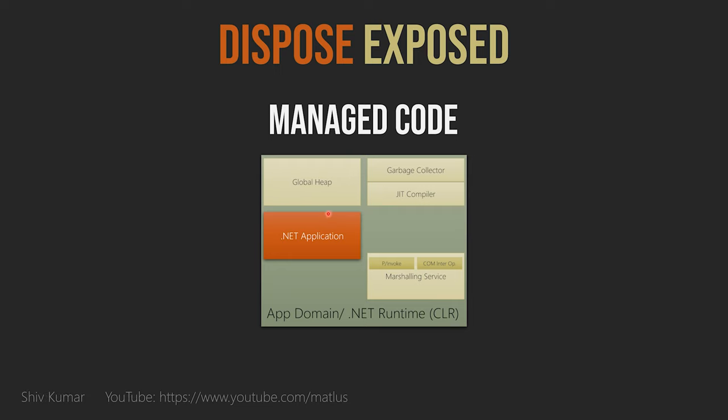All .NET applications run in a single app domain. If the same executable is double-clicked again, they are completely different app domains. This is important to grasp — it plays a big role in ASP.NET applications where by default your application will run as multiple app domains. Each app domain has its own global heap, garbage collector, JIT compiler, and marshaling services.